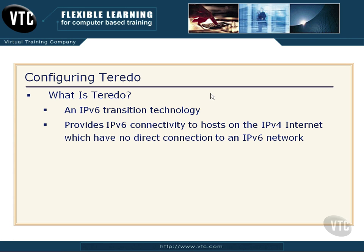Watch for this on the exam: ISATAP is designed to be used on a private network — intranet, that sort of thing. Teredo is designed to be used out there on the public internet. It does the same thing really as ISATAP — it tunnels the IPv6 packets into IPv4 UDP packets.